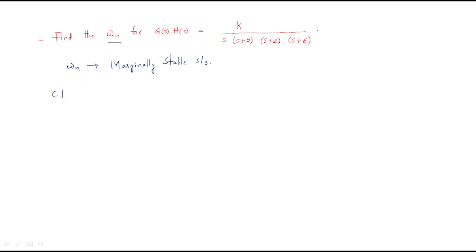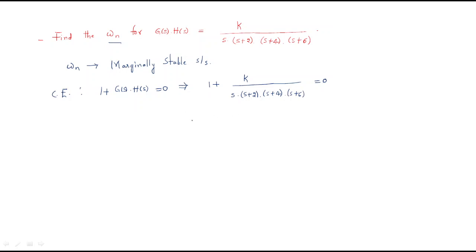He has given only the open-loop transfer function. For the Routh-Hurwitz criteria, we need the characteristic equation: 1 plus G(s)H(s) equals zero. Substituting, we get 1 plus K divided by s(s+2)(s+4)(s+6) equals zero, giving us s(s+2)(s+4)(s+6) plus K equals zero.